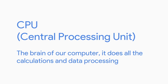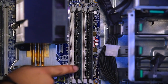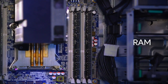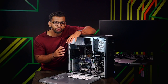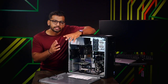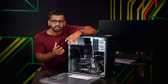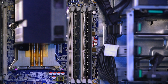The CPU does all the calculations and data processing. It communicates pretty heavily with this component right here — RAM, or Random Access Memory. RAM is our computer's short-term memory. We use this component when we want to store data temporarily, like when you're typing something into a chat or a piece of text in a word processor. This information is stored in the RAM.